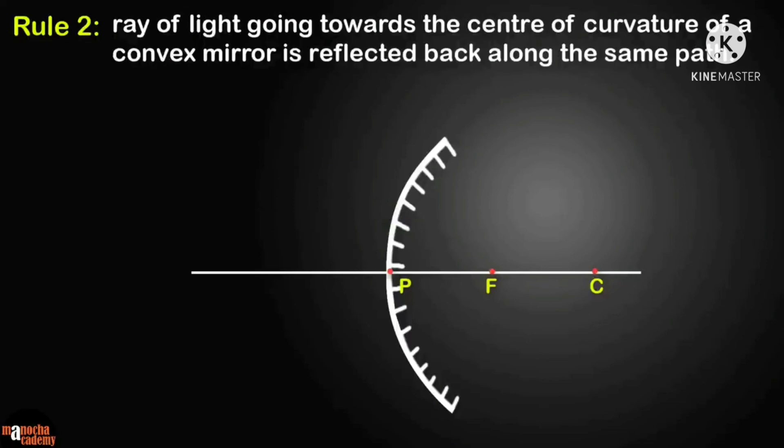Rule 2: a ray of light going towards the center of curvature of a convex mirror is reflected back along the same path.